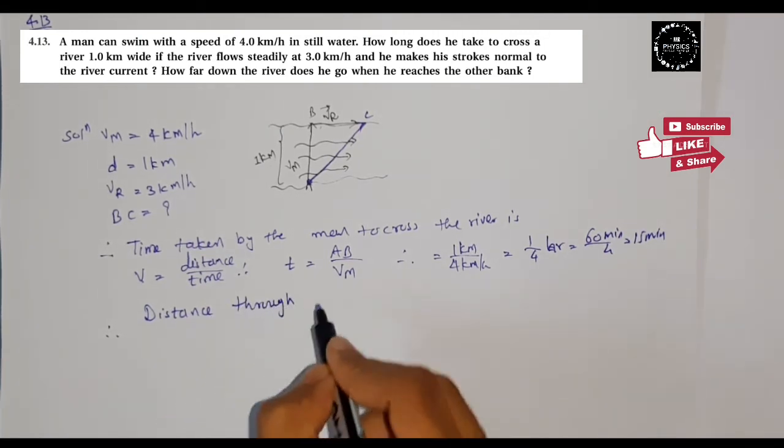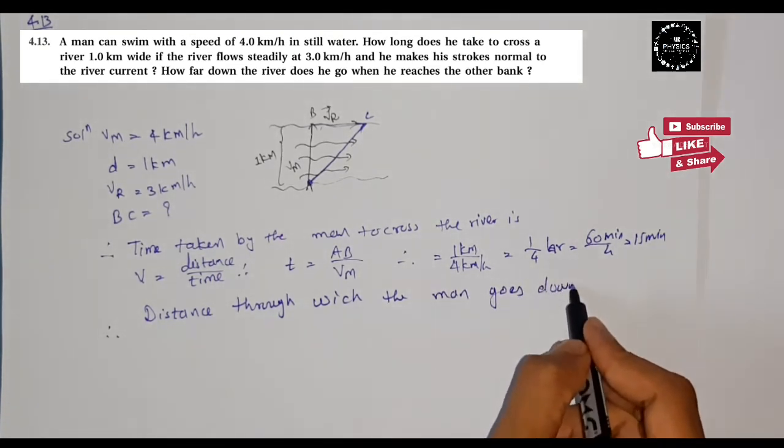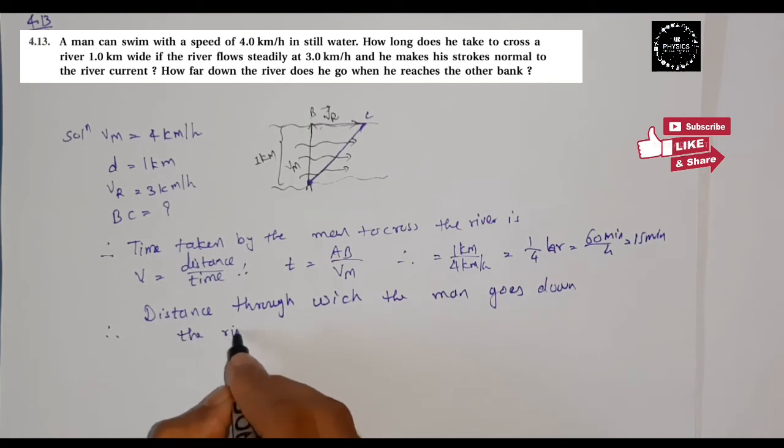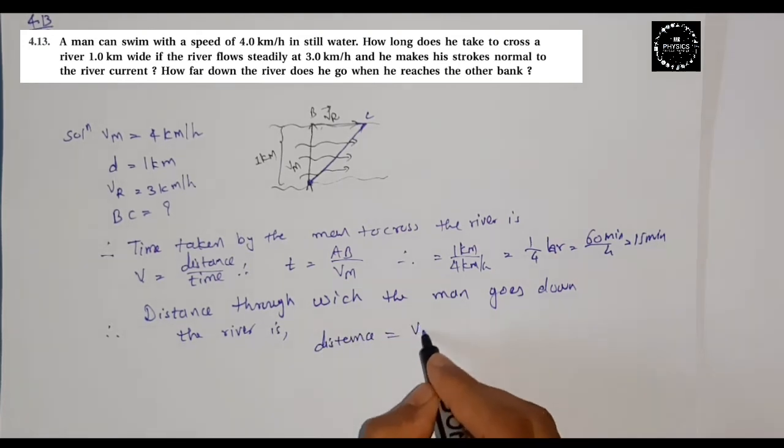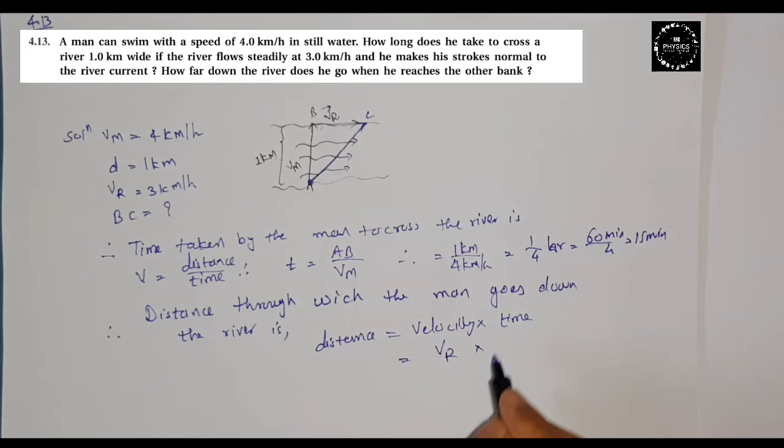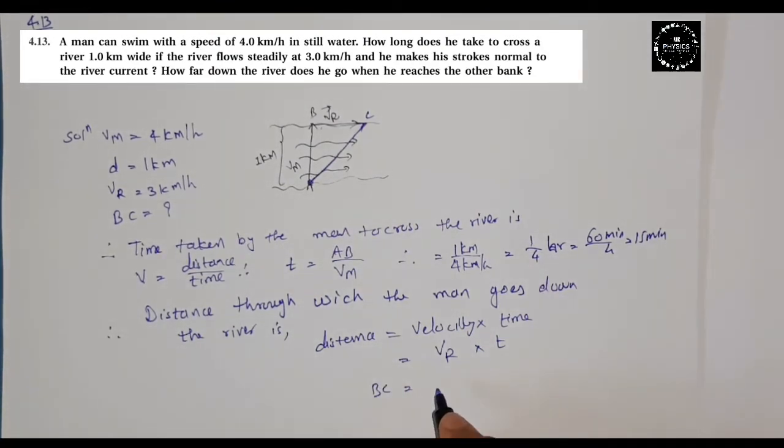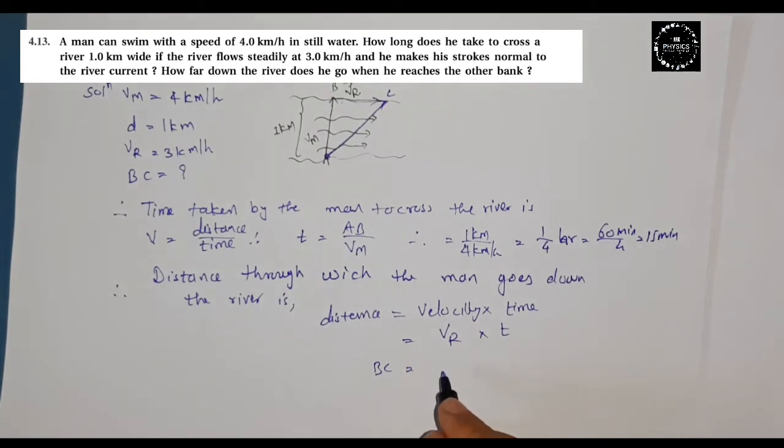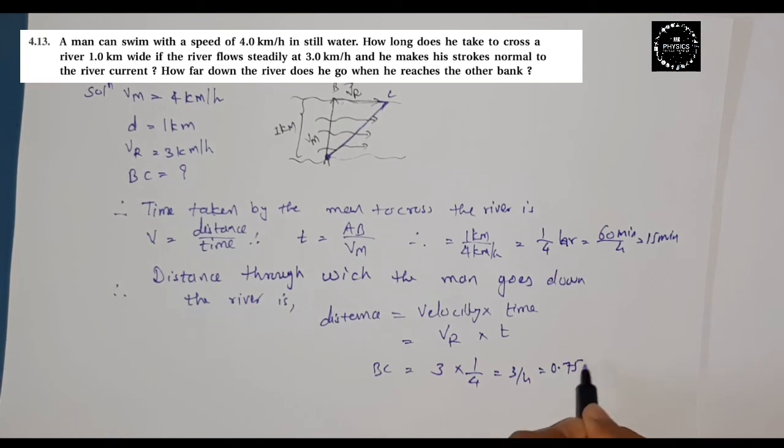The distance through which the man goes down the river is: distance equals velocity into time. Here we're talking about the velocity of the river, so Vr which is 3 km per hour, times t which is 1 by 4. This equals 3 by 4, which equals 0.75 km.